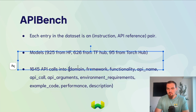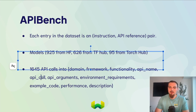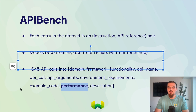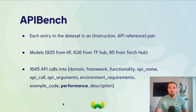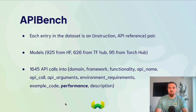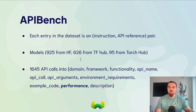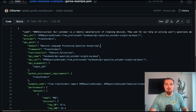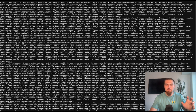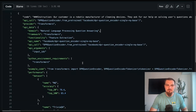Looking at the Gorilla repository, you can see the API bench and HuggingFace training data. Each JSON describes an API similarly to OpenAI Functions — it shows the arguments to make the API call and how to call it. For example, an instruction might be: 'Our customer is a robotic manufacturer of cleaning devices and asked for help on solving user questions' — which maps to question answering. The idea is organizing API calls into JSON so you can prompt GPT-4 to come up with instructions for when you'd want to use this, or retrieve it as the API reference for formatting the call.